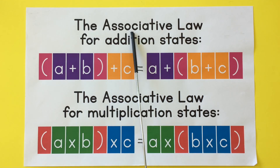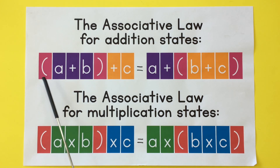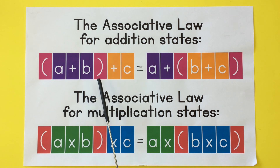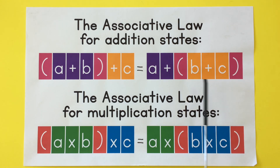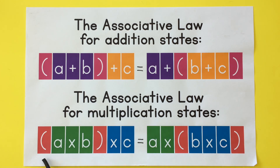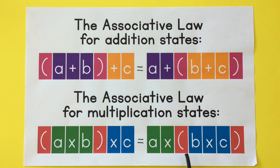The associative law for addition states: (A plus B) plus C equals A plus (B plus C). The associative law for multiplication states: (A times B) times C equals A times (B times C).